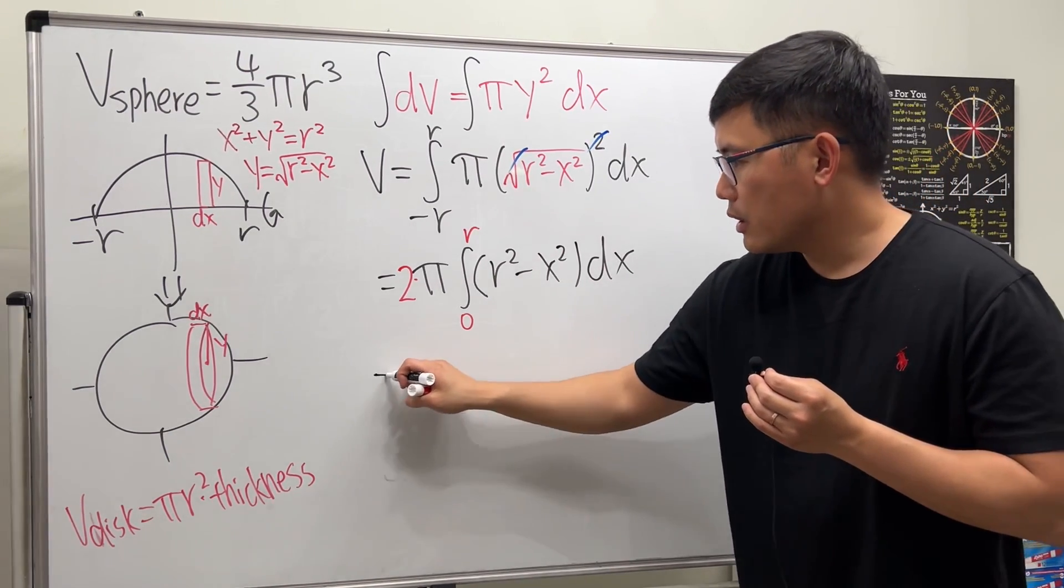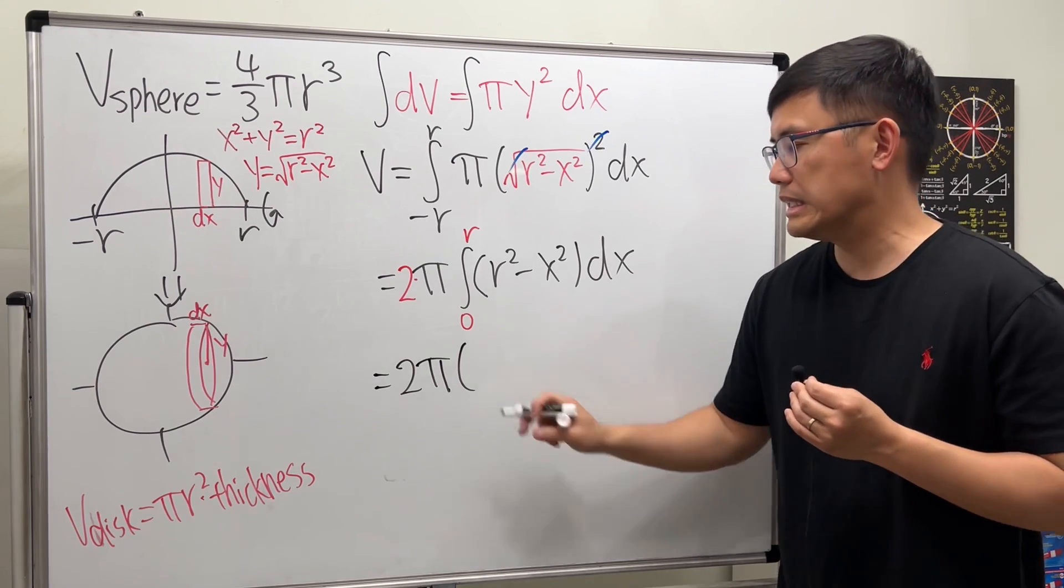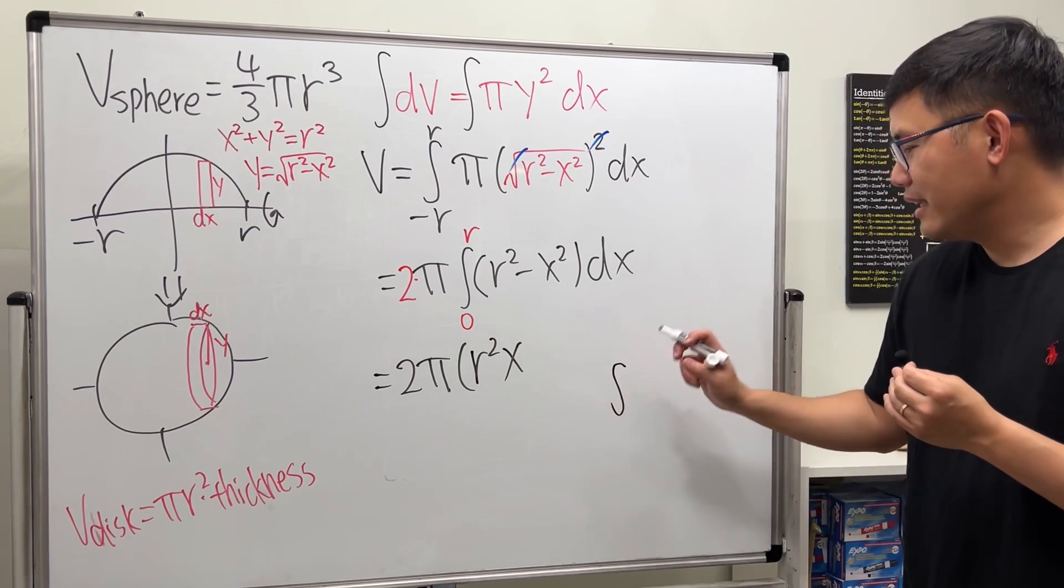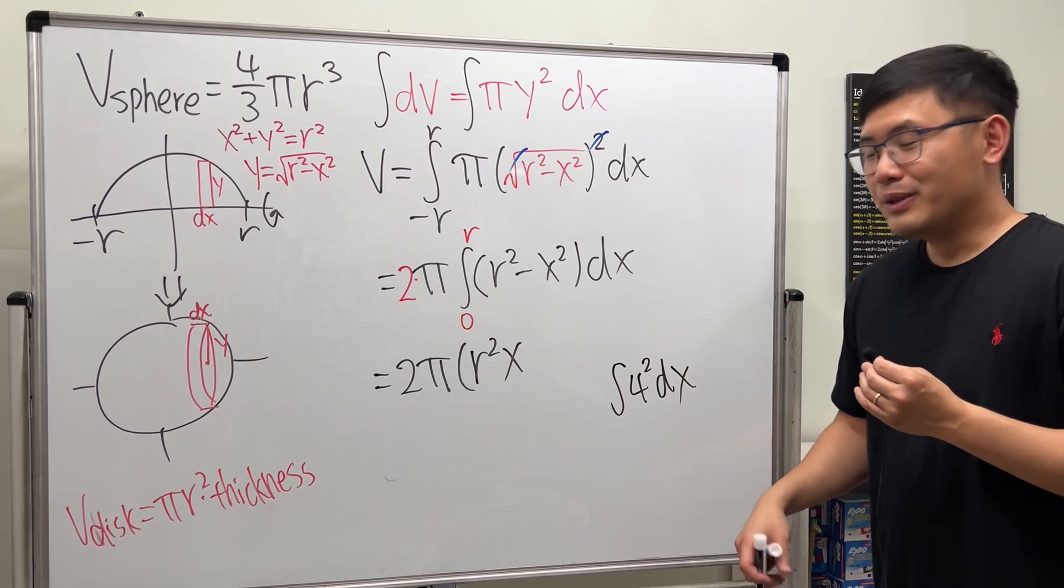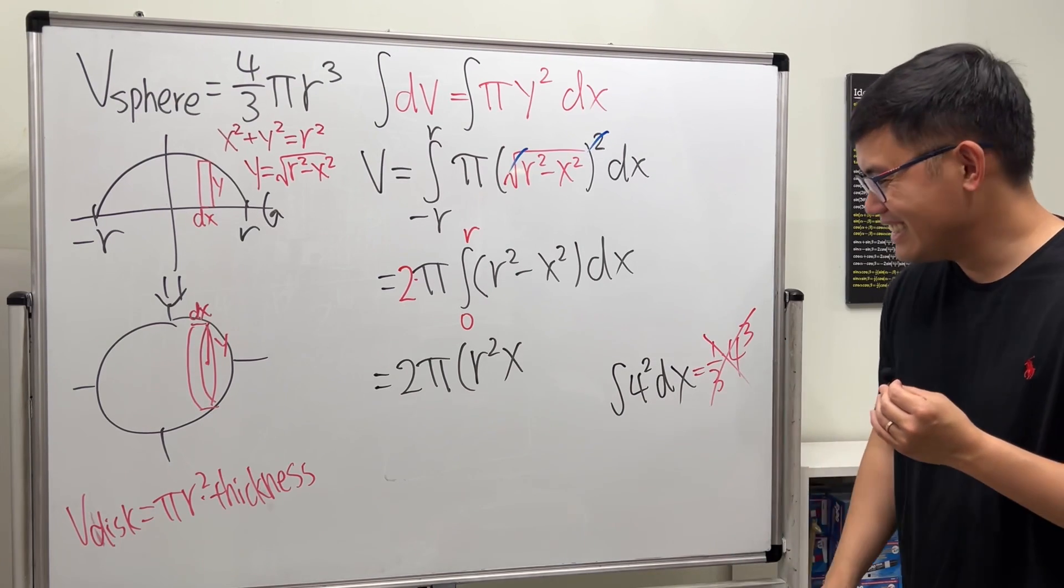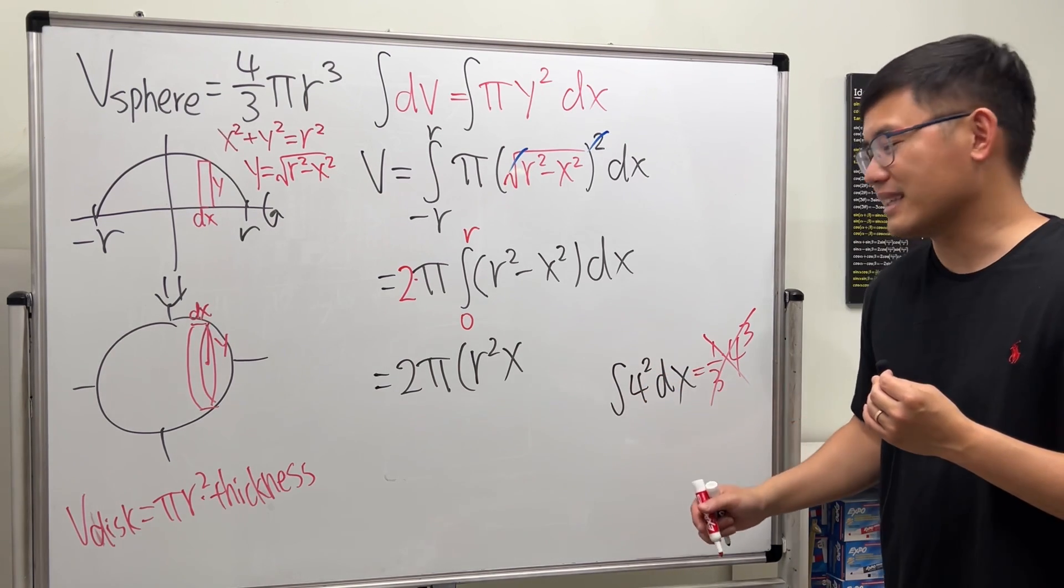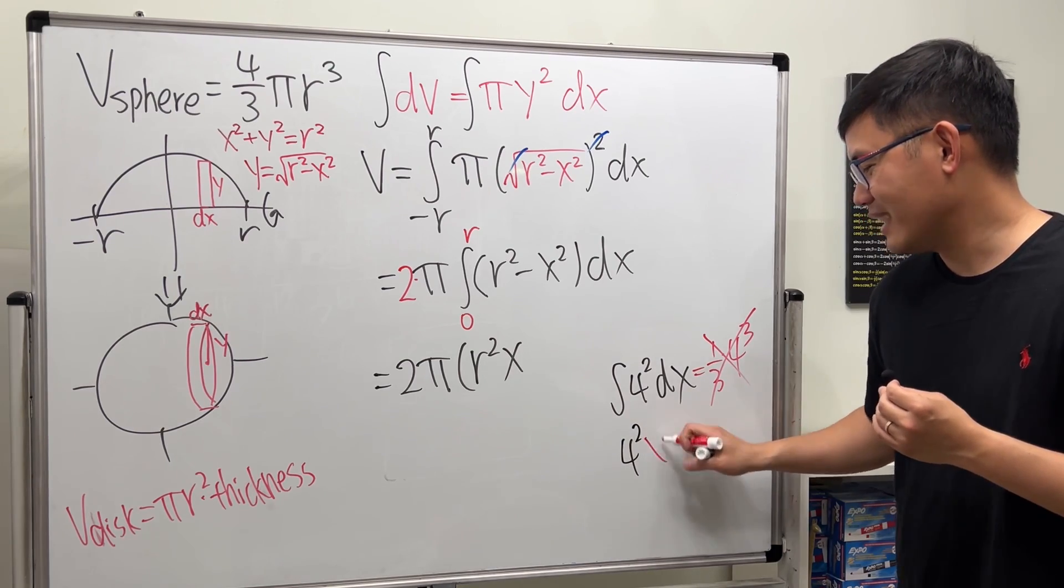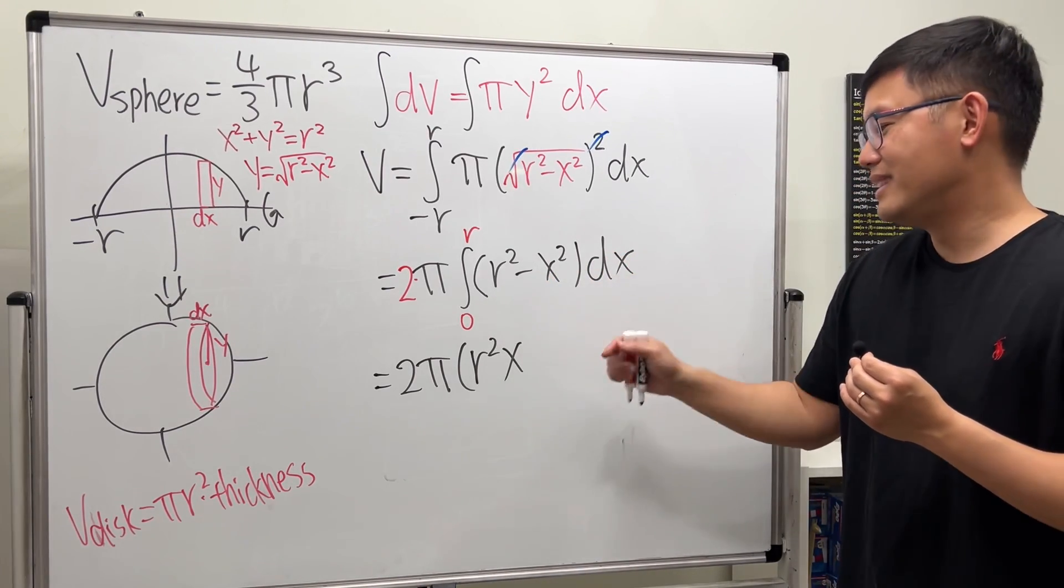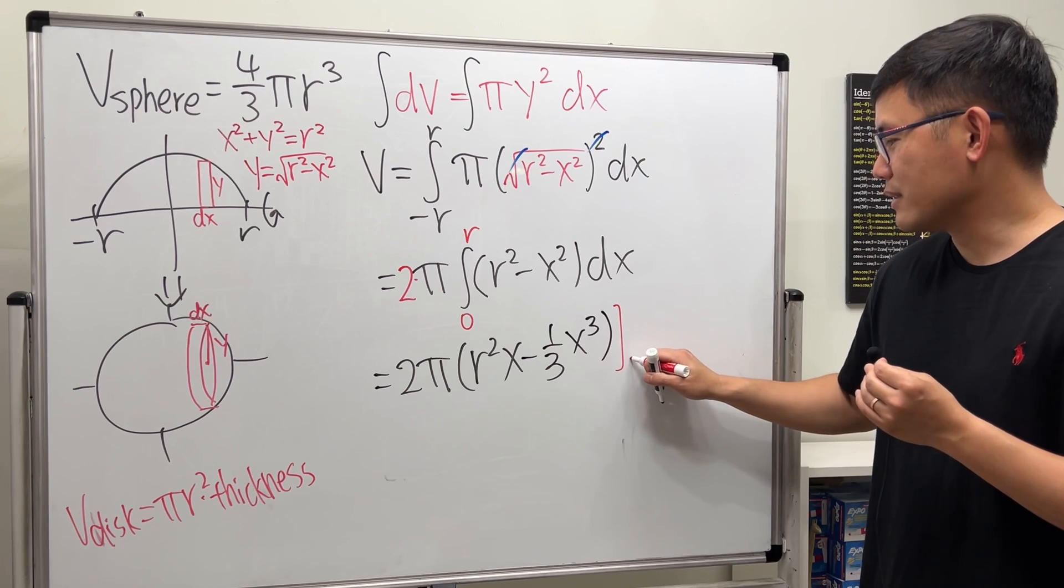Now, we can just work this out. 2π all the way in the front. The integral of r² in the x world is r² times x. Why? Because r is just a constant. You can just think about it as integrating 4² dx. Do not say the answer is equal to 1/3 x, I mean 4 to the third power. No. Don't do that. Because we are in the x world. 4² is just like 16, right? So, the integral of 16 is 16x. So, we can write this as 4² times x. So, it's just like that situation here. Then, integrating -x² in the x world. This is the time we do the reverse power rule. And we get -1/3 x³.